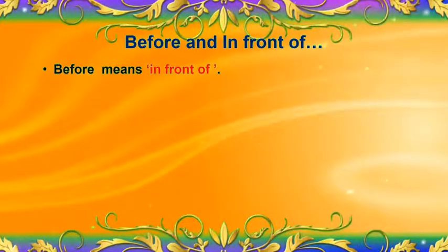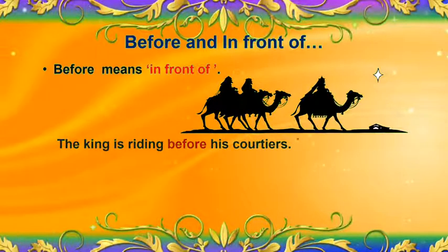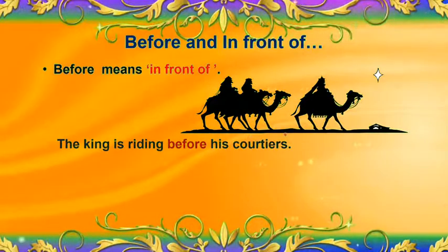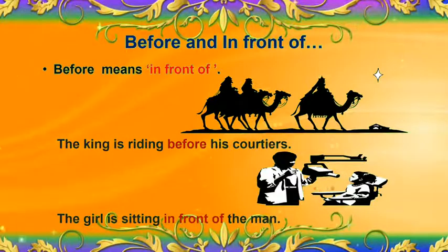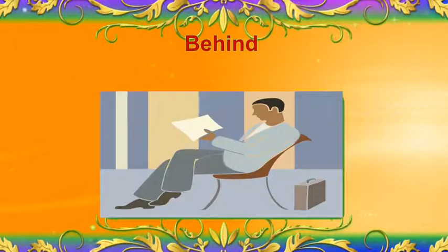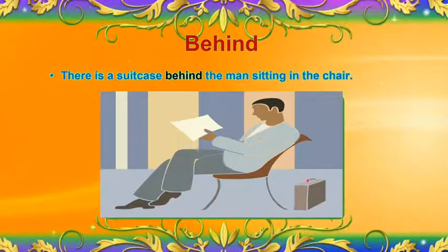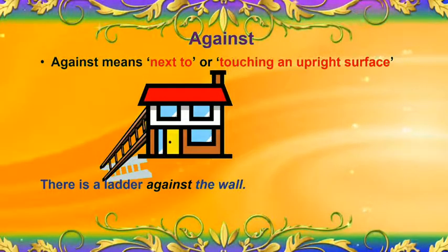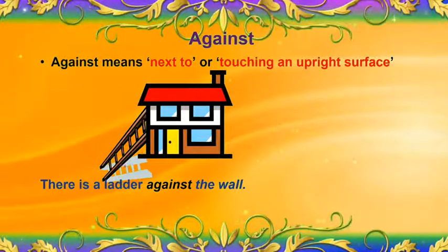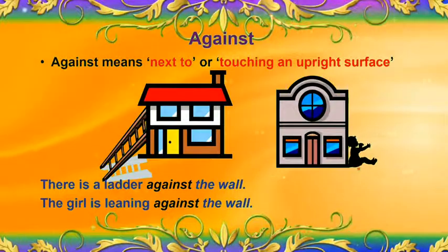Before and in front of: 'before' means in front of. For example, the king is riding before his escorts — the king is at the front. The girl is sitting in front of the man. 'Behind': there is a suitcase behind the man sitting in the chair — it shows just beside on the back of. 'Against' means next to or touching an upright surface. For example, there is a ladder against the wall; the girl is leaning against the wall — touching an upright surface.